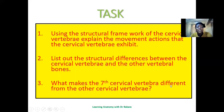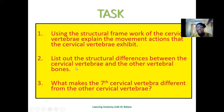The tasks for this lecture are: first, using the structural framework of the cervical vertebra, explain the movement actions they exhibit — such as nodding and rotational movement — and how these can be attributed to their structure. Second, list the structural differences between the cervical vertebra and other vertebrae. Third, explain what makes the seventh cervical vertebra different from the other cervical vertebrae. Thank you for watching — let's continue to upgrade through this channel.